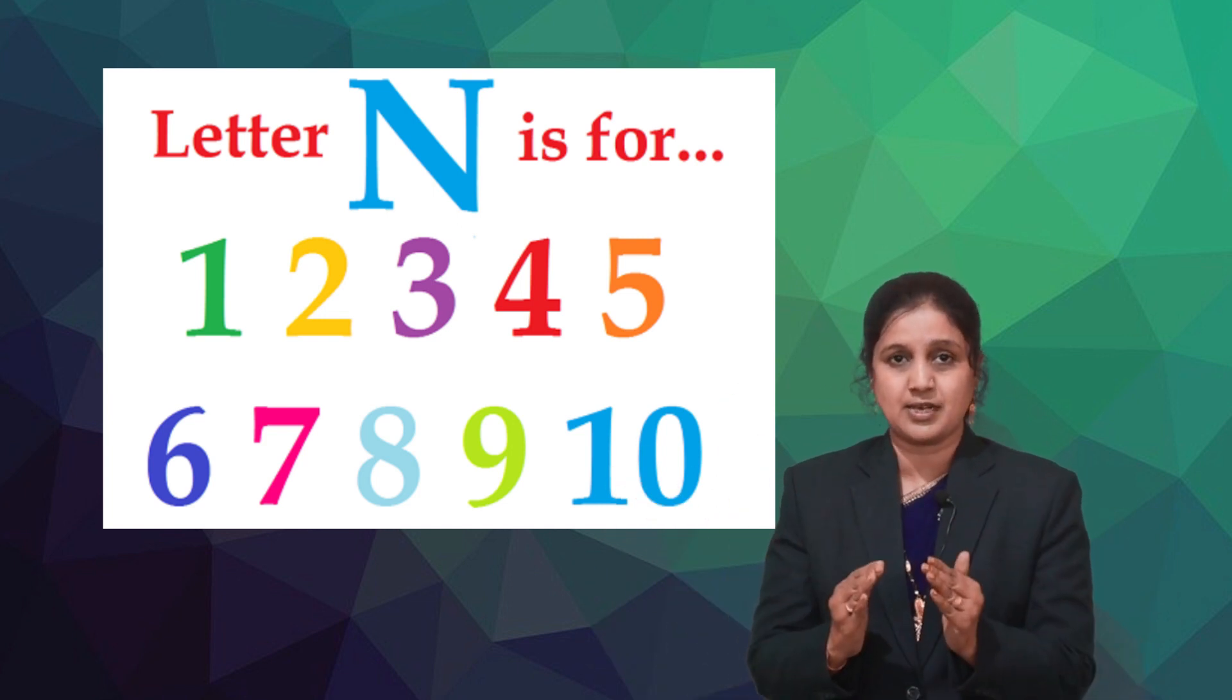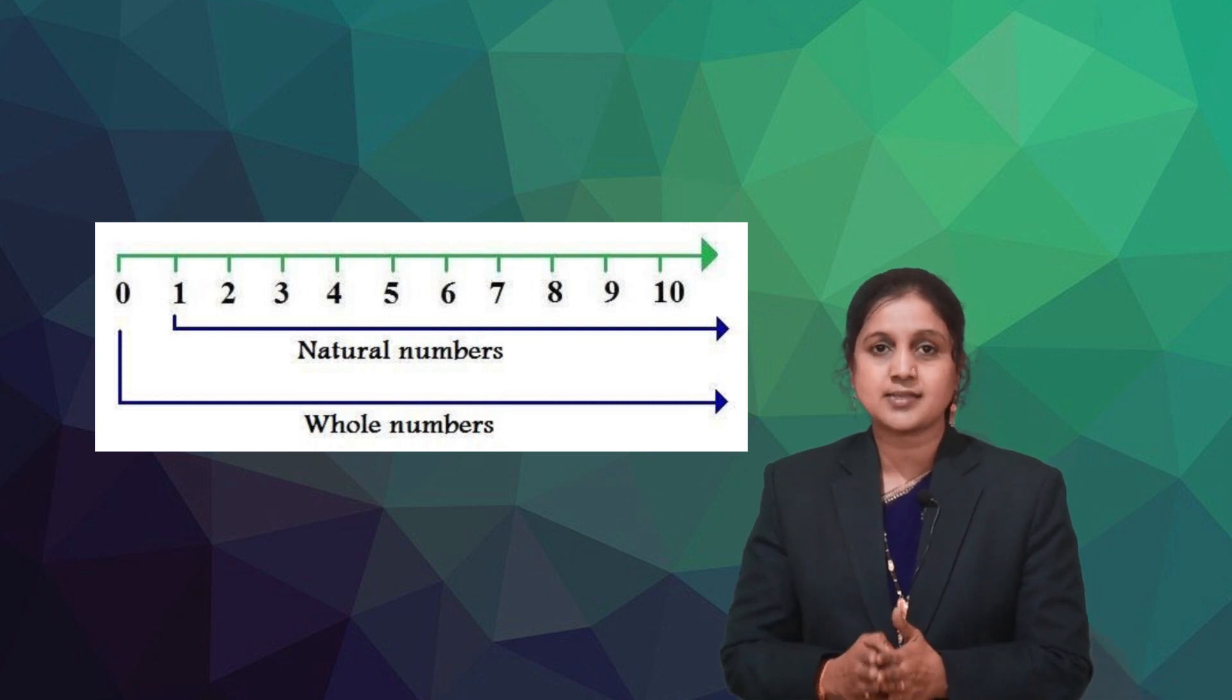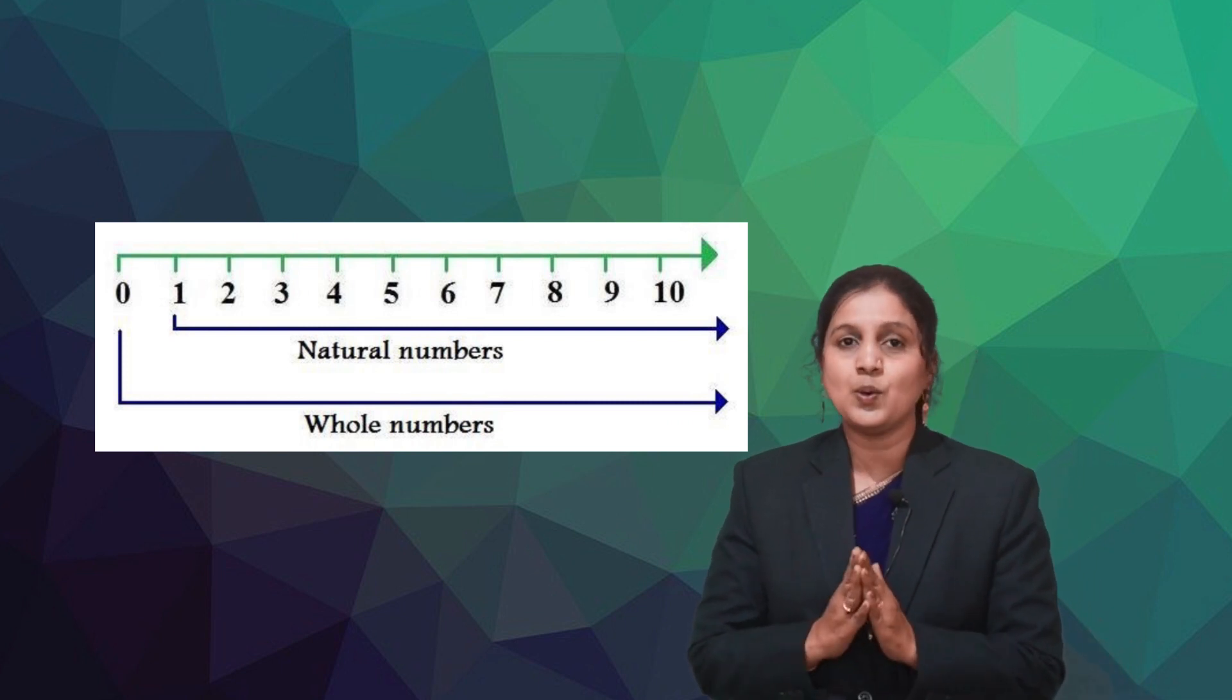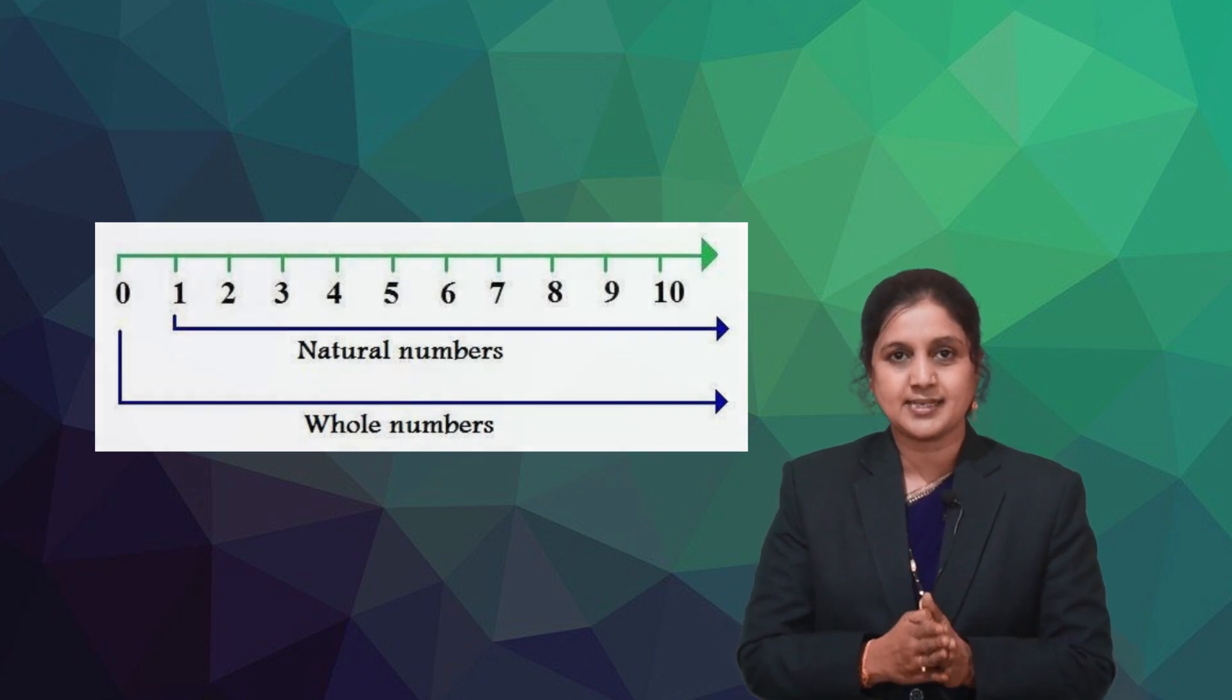The set of all natural numbers along with zero are called as whole numbers. The whole numbers is represented by capital letter W.